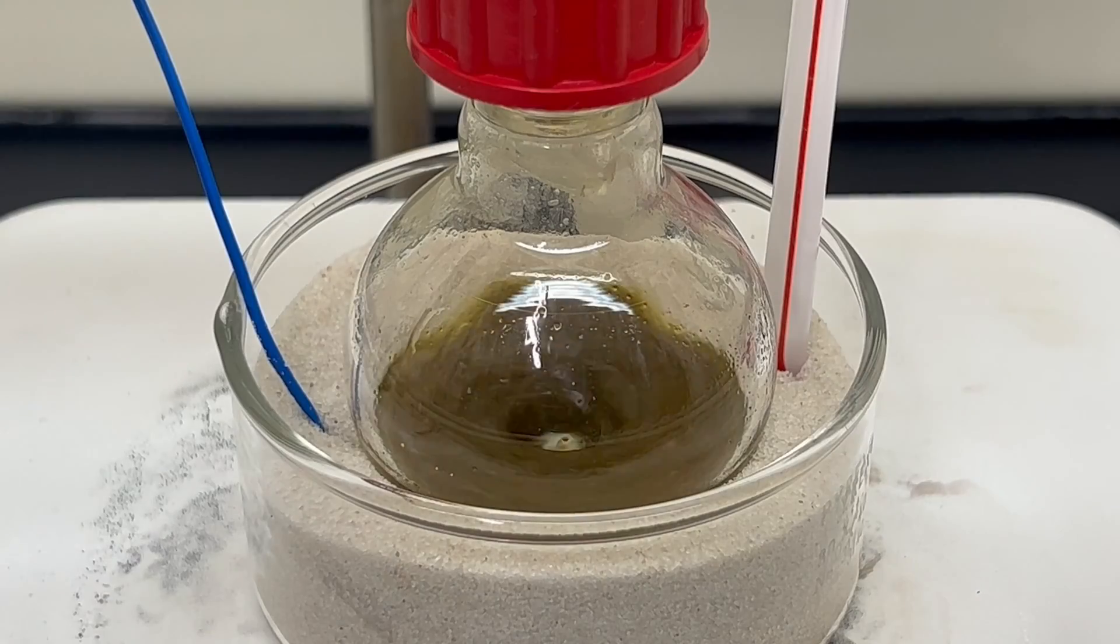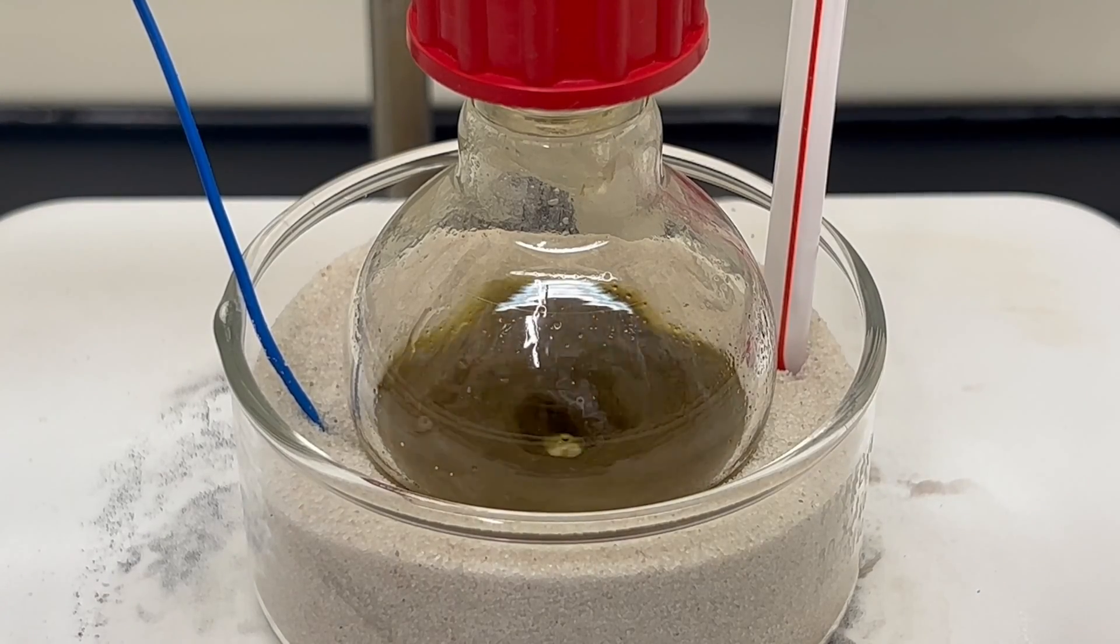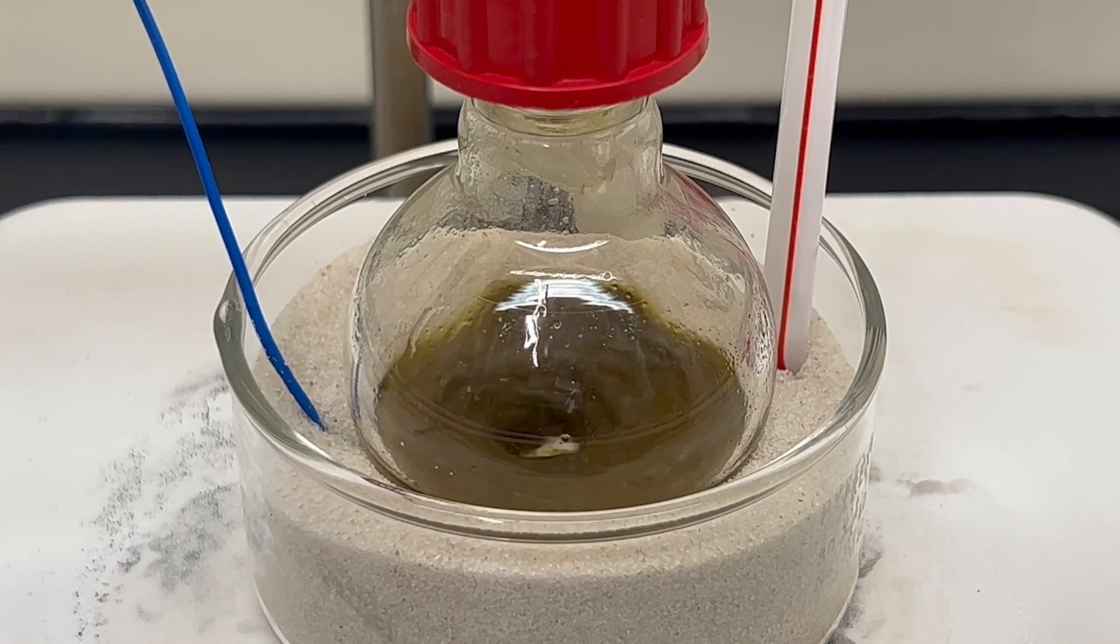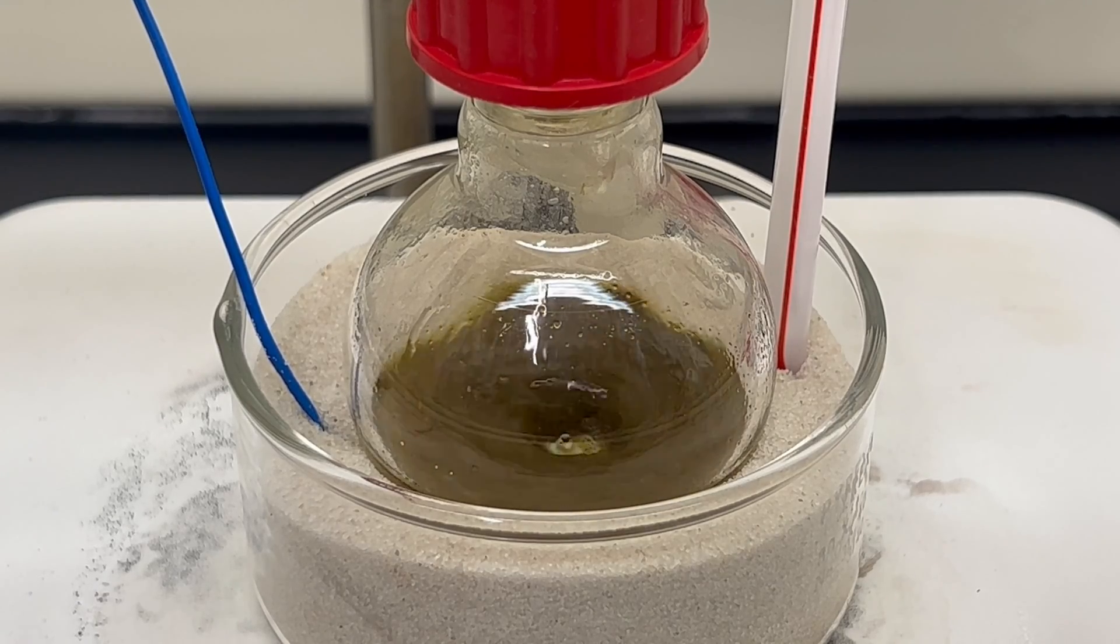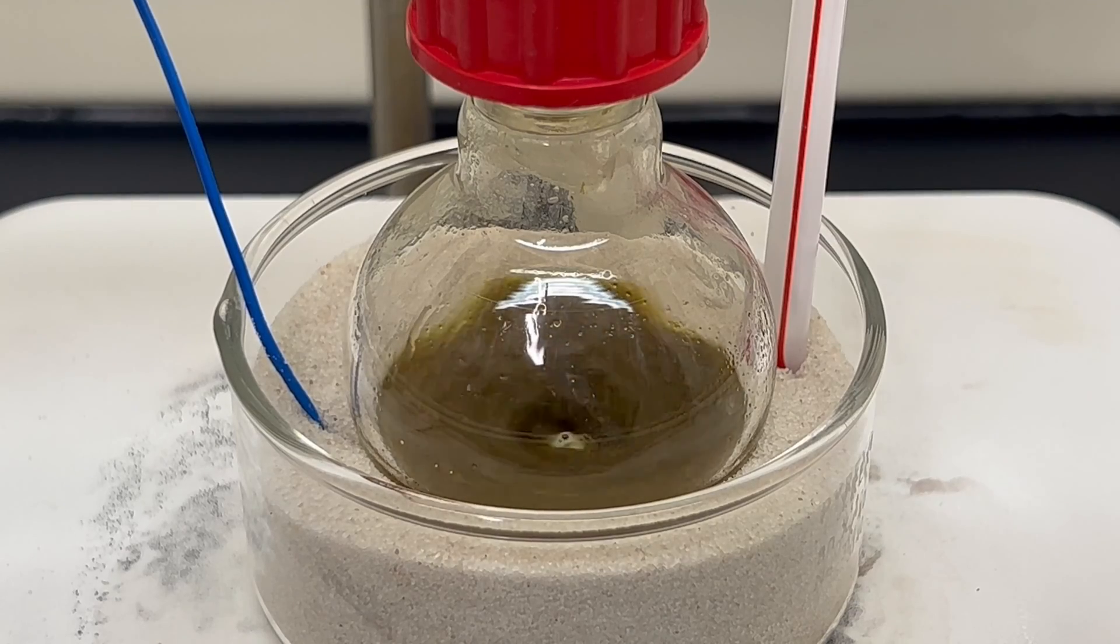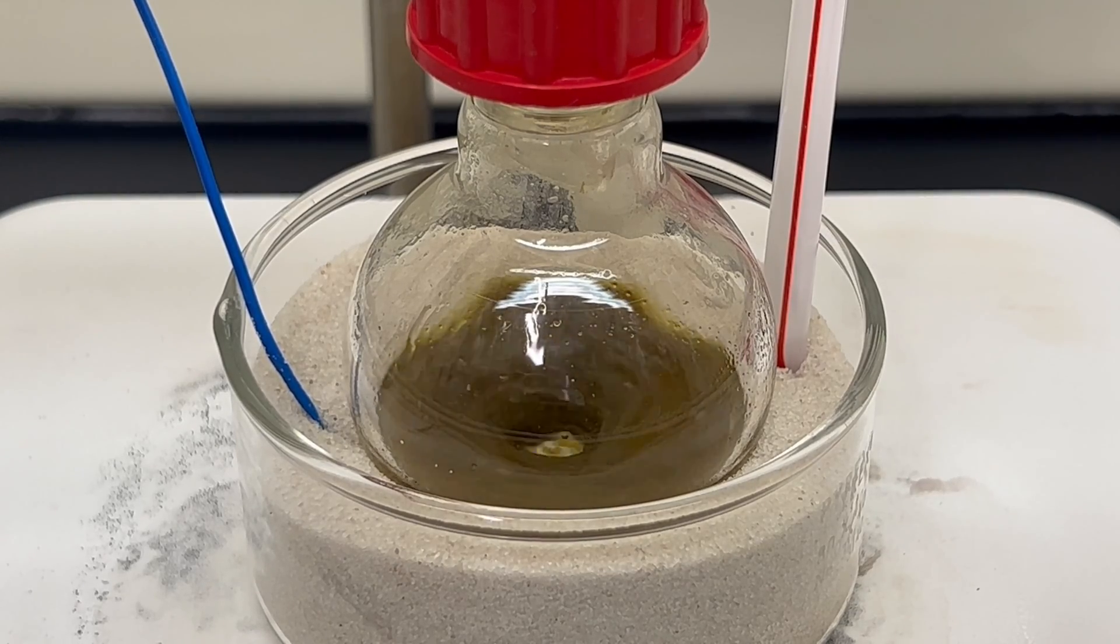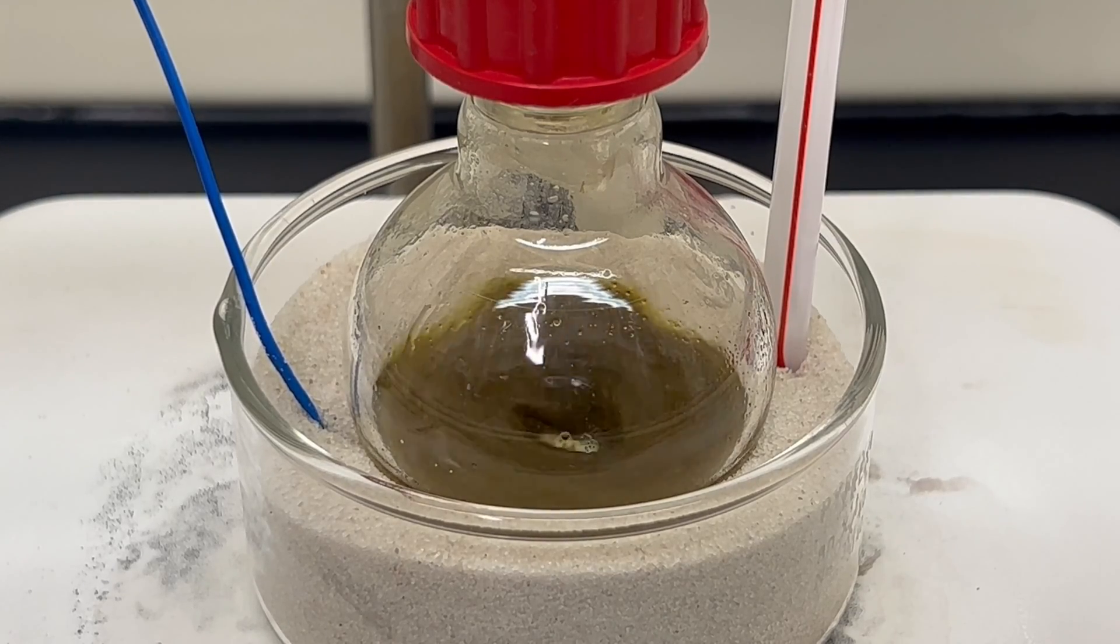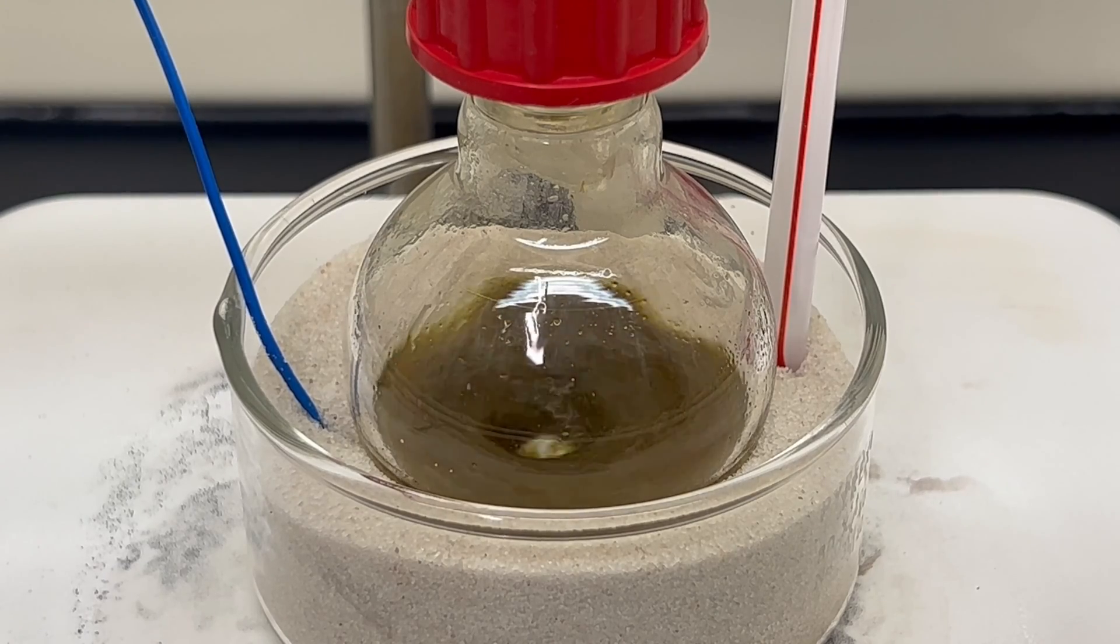The uranium trioxide disappears during this time and is replaced by a green material, the uranium tetrachloride. The reaction between uranium trioxide and hexachloropropene most likely produces hexachloride of uranium which then thermally decomposes forming the desired uranium tetrachloride.